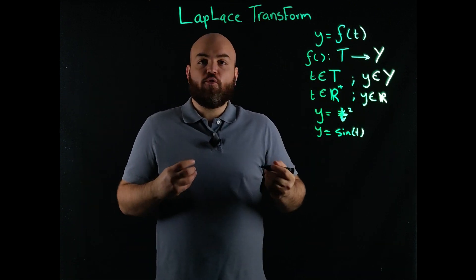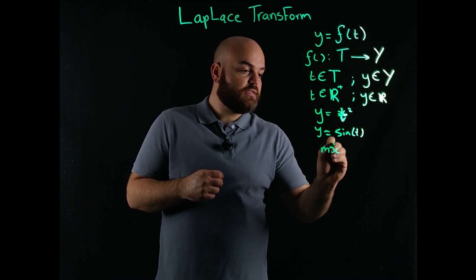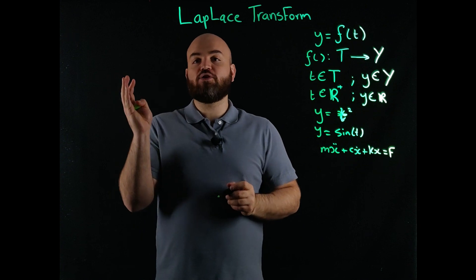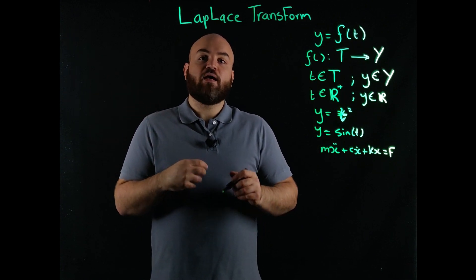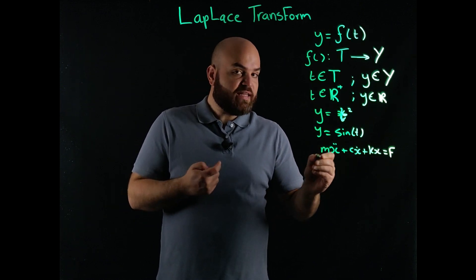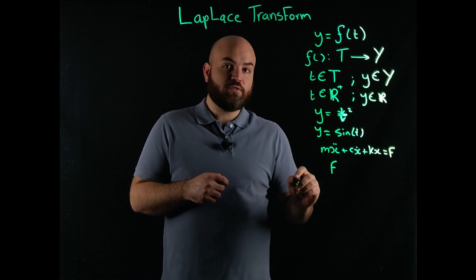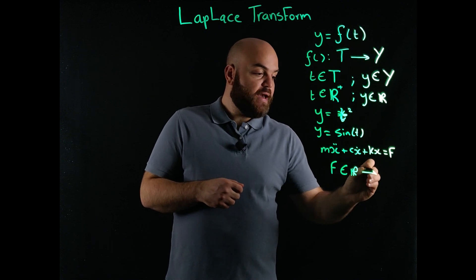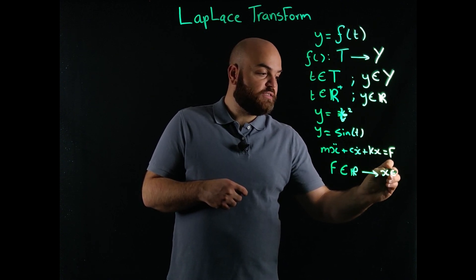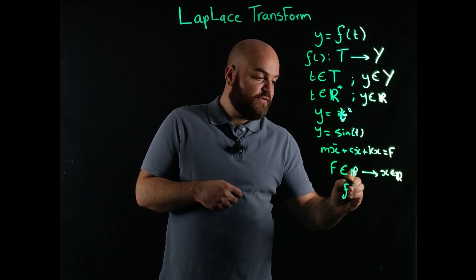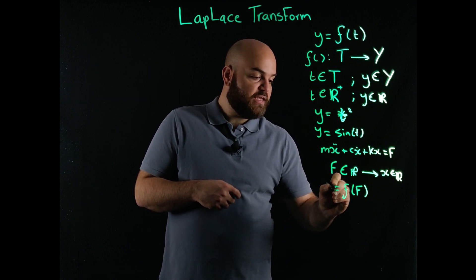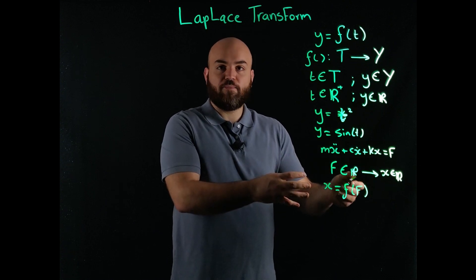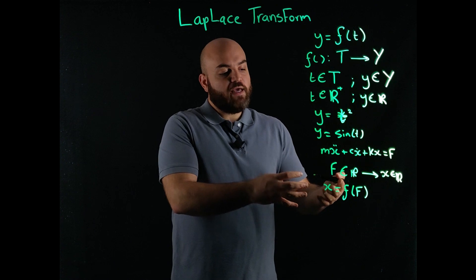Take, for example, the equation for a spring-mass-damper system: mx double-dot plus cx-dot plus kx equals f, the external force. So if I want to get the mapping that takes in an f input — where f is in the real domain, because the force acting on the system is a real number — and map that to x, which is also in the real domain, I could solve this differential equation and find this map. But there's an easier way, and this easier way is typically done through the Laplace transform.